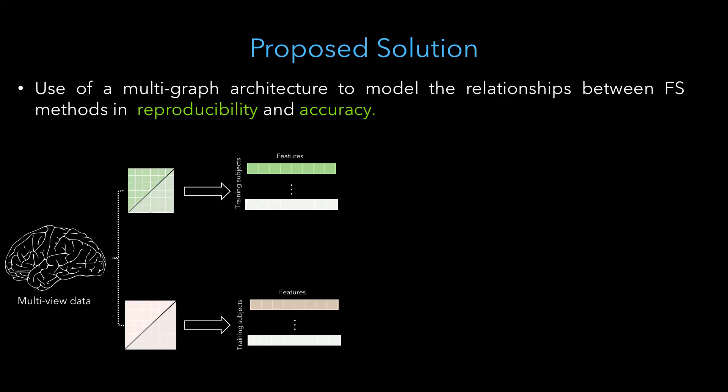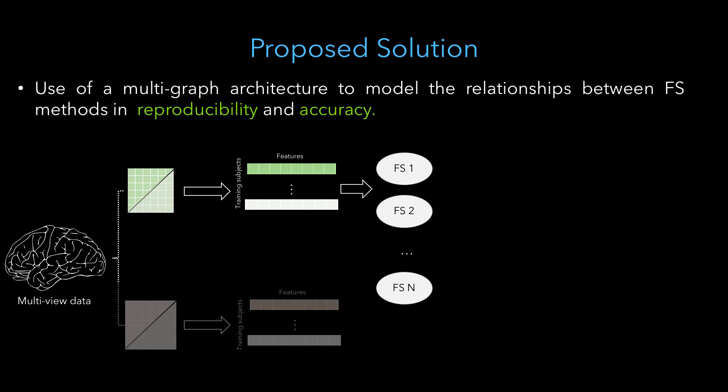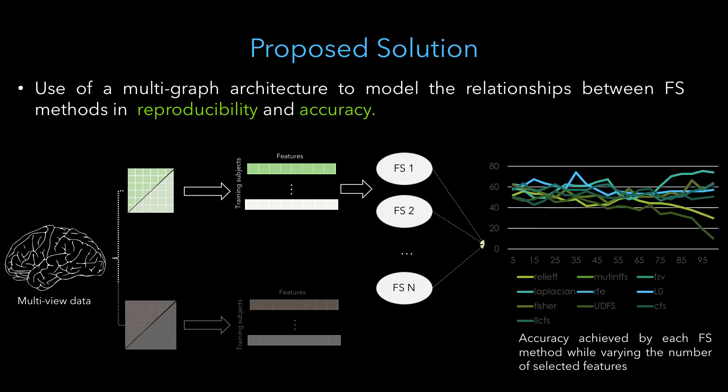We represent each network view by a feature vector. We train a support vector machine classifier on each individual view using a set of FS methods. The training is performed independently. We report the accuracy of each FS method for different number of top-ranked features.